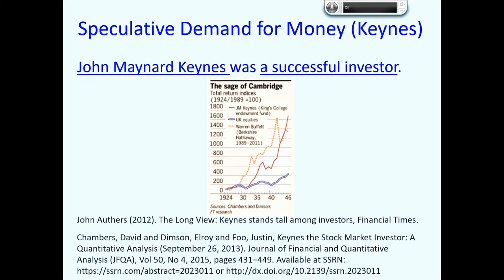Not only is John Maynard Keynes a renowned economist, but he was also a very successful investor — he was bursar for King's College, Cambridge. At the time when Keynes was investing for Cambridge, all endowment funds were invested in treasury stock (gilted securities) to maintain asset value. The trustees wanted to be seen as good stewards of the funds and chose to invest in treasury stock bonds unlikely to fall in value. However, Keynes believed that company shares offered a better investment vehicle, and he was a highly successful investor.